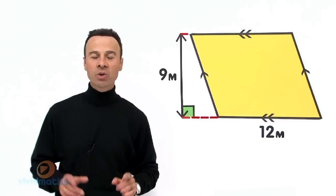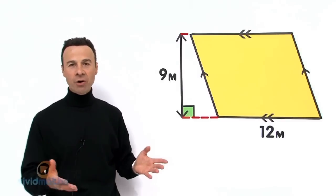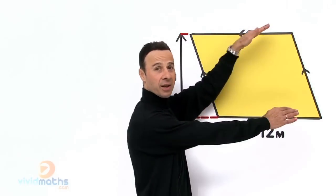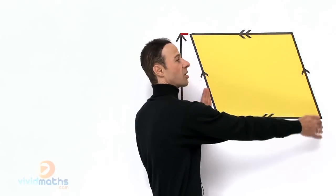It's called a parallelogram, and a parallelogram is denoted and identified by the fact that it has parallel lines across here and parallel lines across there.